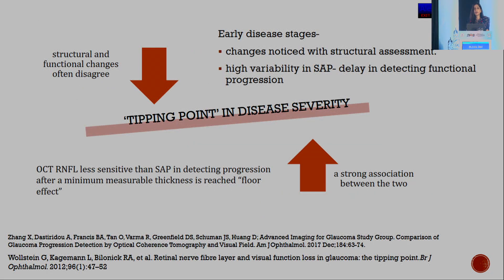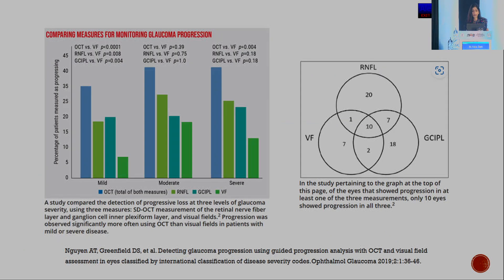In the early stages of the disease, structural and functional changes often disagree. Structural changes come in early and the variability in automated perimetry is higher. But there comes a tipping point in disease severity after which there is a stronger correlation between the two, or maybe even a reversal. The OCT becomes less sensitive than automated perimetry — specifically the classical OCT of RNFL thickness — in detecting progression due to this floor effect. Studies have highlighted that OCT-RNFL fares better in mild to moderate glaucomas.